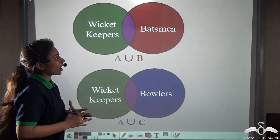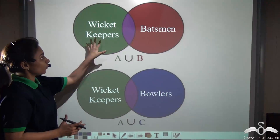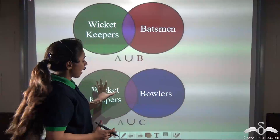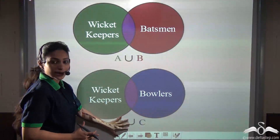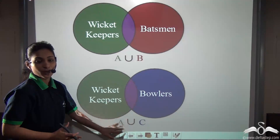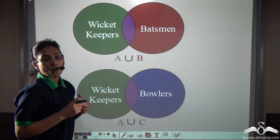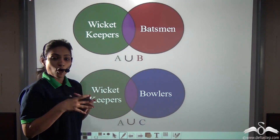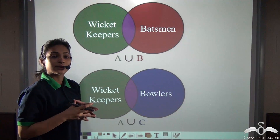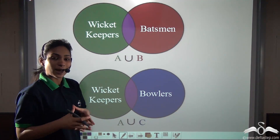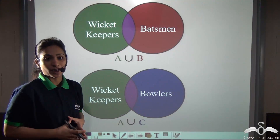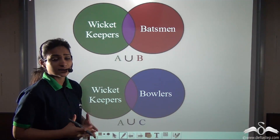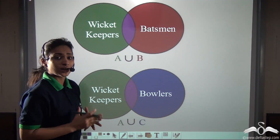So now you are having two teams in front of you: wicket keepers and batsmen, that is A union B, and wicket keepers and bowlers, that is A union C. But now you were confused. What you actually wanted was a set of all rounders — people who were batsmen and bowlers — and a set of wicket keepers.